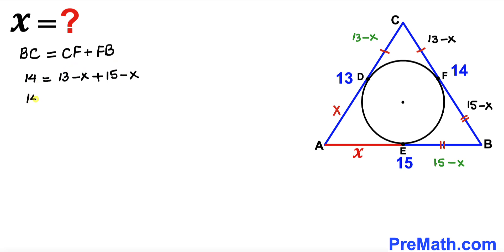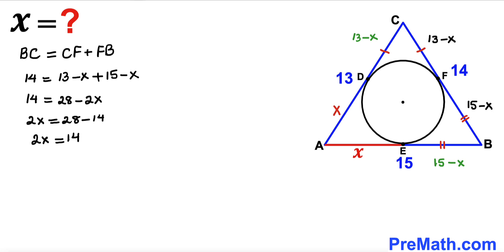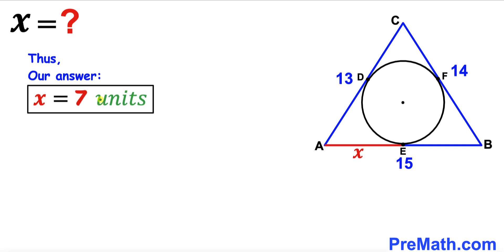From 14 = 28 minus 2X, moving 2X to the left and 14 to the right gives 2X = 28 minus 14, so 2X = 14. Dividing both sides by 2, we conclude that X = 7 units. So the length AE equals 7 units.